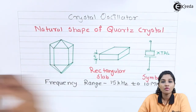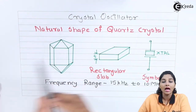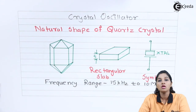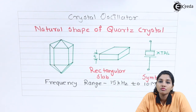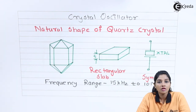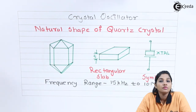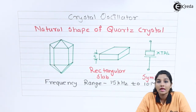The natural shape of quartz crystal is hexagonal with pyramids on the top and bottom. In order to get a crystal out of that, we need to rectangularly cut the slab. The different types of cuts are X cut, Y cut, XY cut, and AT cut.